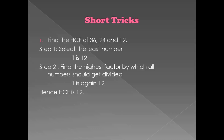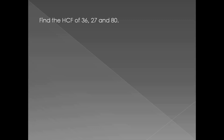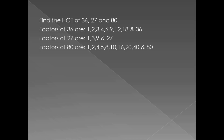Now here is a very special case: find the HCF of 36, 27, and 80. Here, 36 and 27 share a common factor of 9, but 80 cannot be divided by 9. Looking at the factors of 36, 27, and 80, there is no common factor shared by all three numbers except 1. So in this case, the HCF is 1.